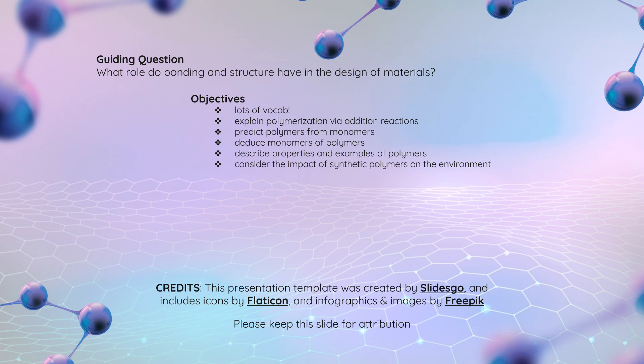On that slightly disheartening note, we have accomplished our guiding question: we talked about how bonding and structure help us design materials like polymers. We covered so much vocabulary, polymerization via addition reactions, making polymers from monomers and working backwards to find monomers from polymers, the properties of some polymers, and the impact of synthetic polymers and plastic on our environment. Great work today!